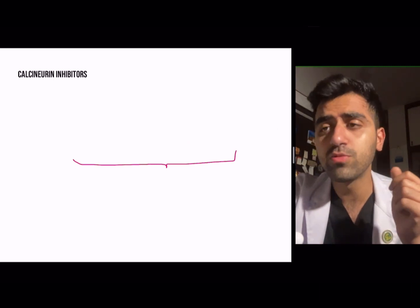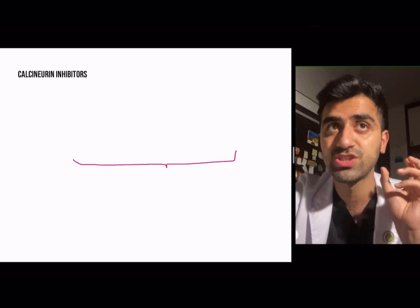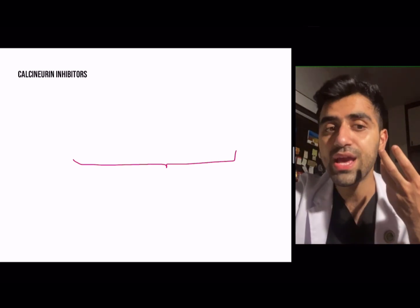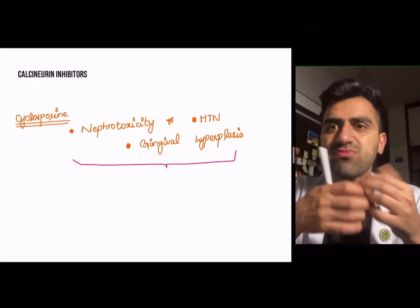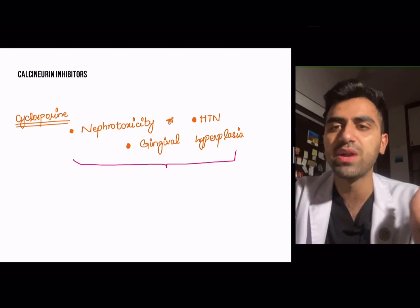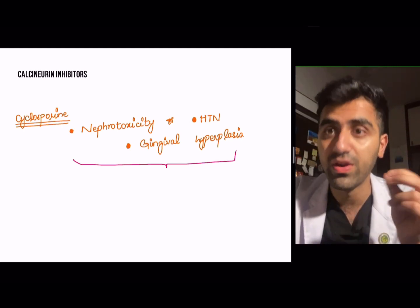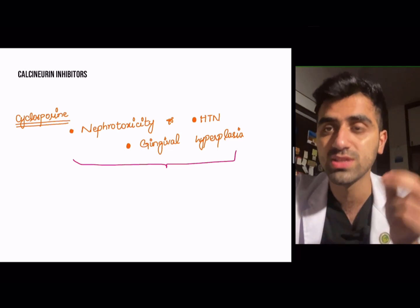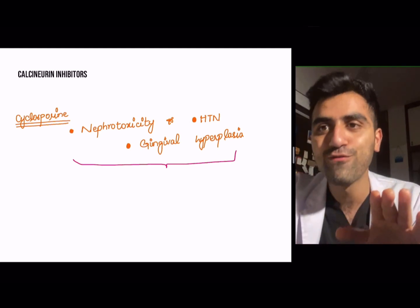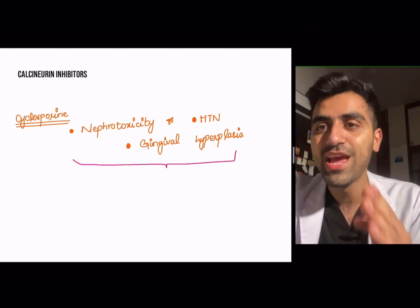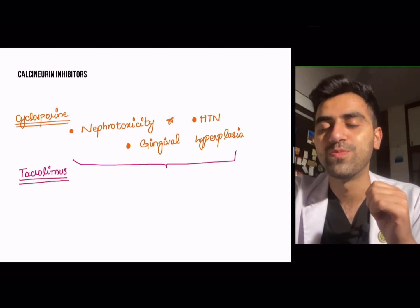In pharmacology, side effects are among the most important things tested in exams. Cyclosporine causes a wide array of specific effects: nephrotoxicity — very important to remember — hypertension, gingival hyperplasia, and hirsutism.